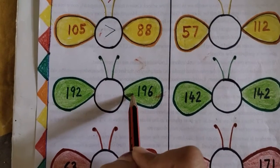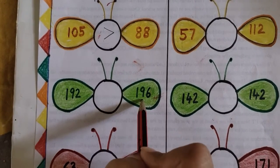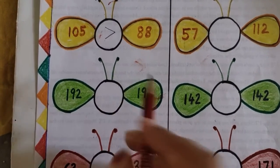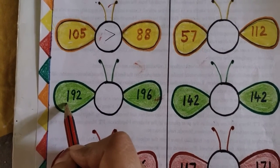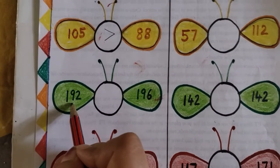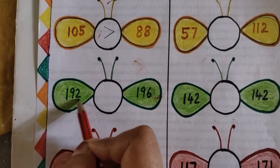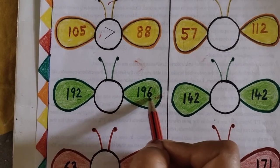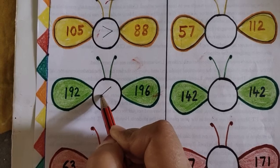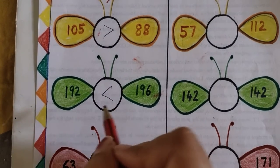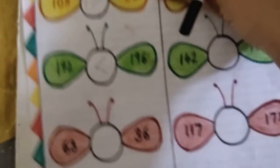Next, 196 and 192. So we have 3 digit number both the sides. Now we will compare the digits. We will start from this side, left side. This is 1, 1, so this is equal. Then 10's, 9 and 9, these are equal. Then 1's digit, 2 and 6. So which one is greater? 6 is greater. So 196 is greater than 192, and we will be putting this sign.